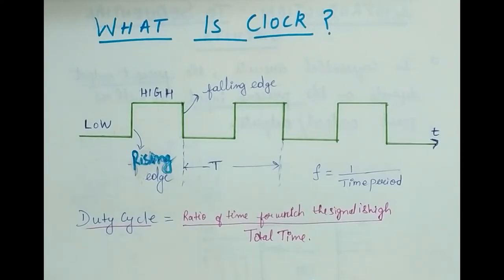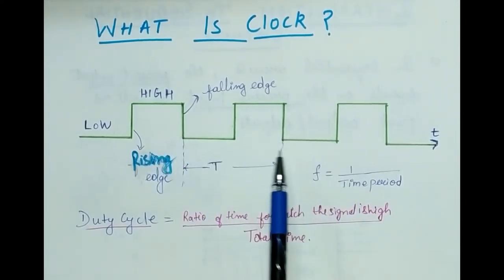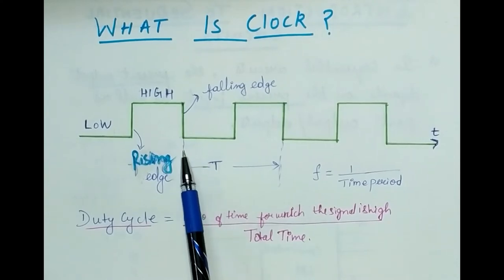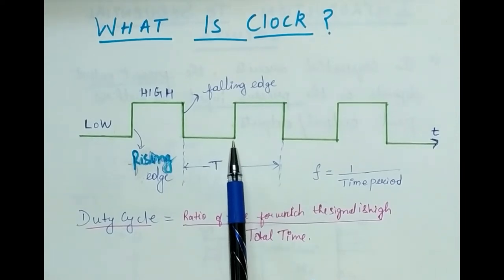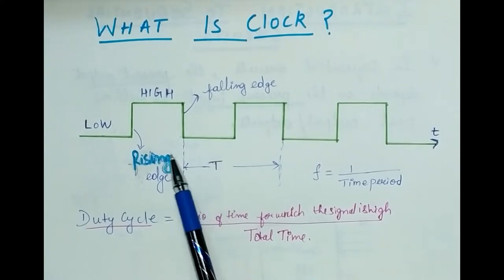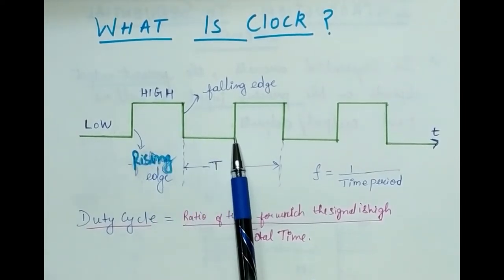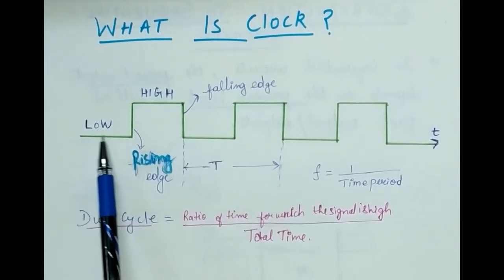Now what is a clock signal? This is a simple clock signal which looks like a square wave, and a square wave is generally a clock signal. We call it a clock because, just as in general day-to-day life we use a clock that repeats itself, similarly this signal also repeats after a particular duration of time.